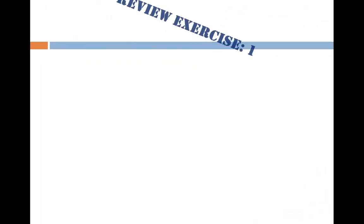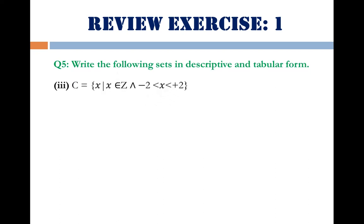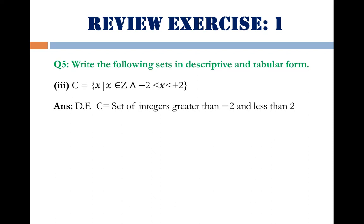Part 3: C = {x | x ∈ Z and -2 < x < 2}. Z indicates the set of integers. The descriptive form is: set of integers greater than -2 and less than 2. The tabular form is: {-1, 0, 1}. A number line can help here — integers lying between -2 and +2 are visible on the number line with 0 in the center, +1, +2, +3 to the right, and -1, -2, -3 to the left.